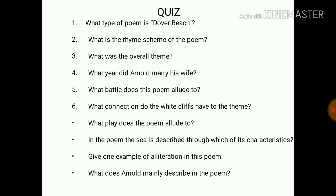Here is a quiz for you — write down the answers in your notebooks and rewatch the video as needed: What type of poem is Dover Beach? What is the rhyme scheme of the poem? What is the overall theme? What year did Arnold marry his wife? What battle does the poem allude to? What connection do the white cliffs have to the theme? What play does the poem allude to? Give one example of alliteration in this poem. What does Arnold mainly describe in this poem?